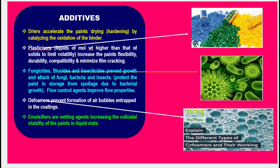Additives — specific types: Dryers accelerate the paint's drying and hardening by catalyzing the oxidation of the binder. Plasticizers increase the paint's flexibility, durability, and compatibility and minimize film cracking. Fungicides, biocides, and insecticides prevent growth and attack of fungi, bacteria, and insects, and protect the paint in storage from spoilage due to bacterial growth. Flow control agents improve flow properties. Defoamers prevent formation of air bubbles entrapped in the coating. Emulsifiers or wetting agents increase the colloidal stability of the paints in liquid state.